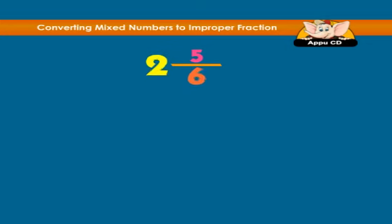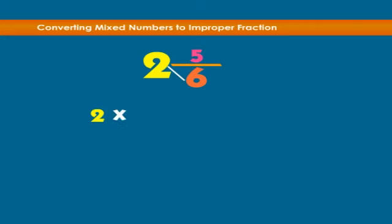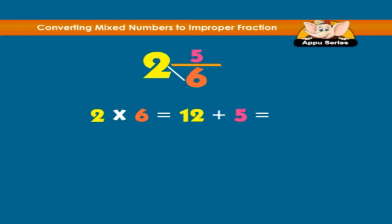First, multiply 2 by 6, that is multiply the whole number by the denominator. Then add it to the numerator of the fractional part, which is 5. Hence, 17 becomes our new numerator.